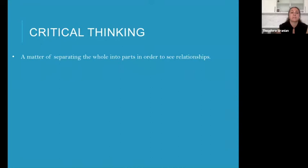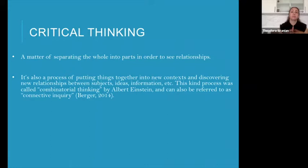One of the simple things I start out with students is this idea that critical thinking is a matter of separating the whole into parts in order to see relationships. Whatever the whole is is completely contextual — it could be this conversation, a movie you just saw, a conversation with a friend, or a scholarly paper. But separating the whole of it to see how it functions. In tandem with that, it's also a process of putting things back together into new contexts to discover new relationships between subjects, ideas, information, people, etc. Einstein called this process combinatorial thinking. The journalist Warren Berger uses the term connective inquiry, which I think functions much better.